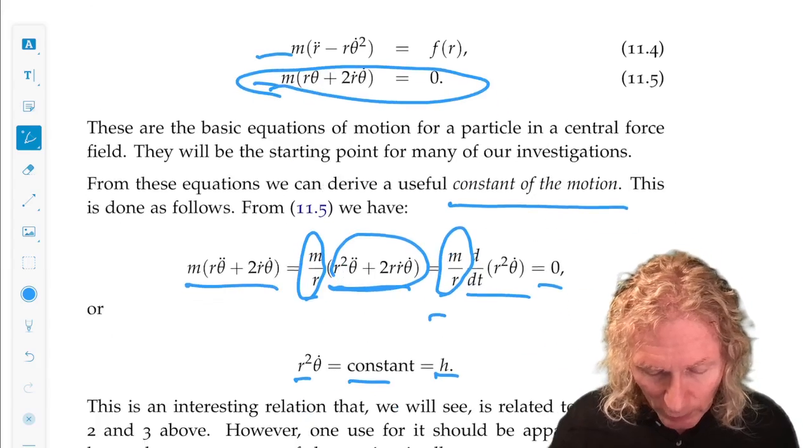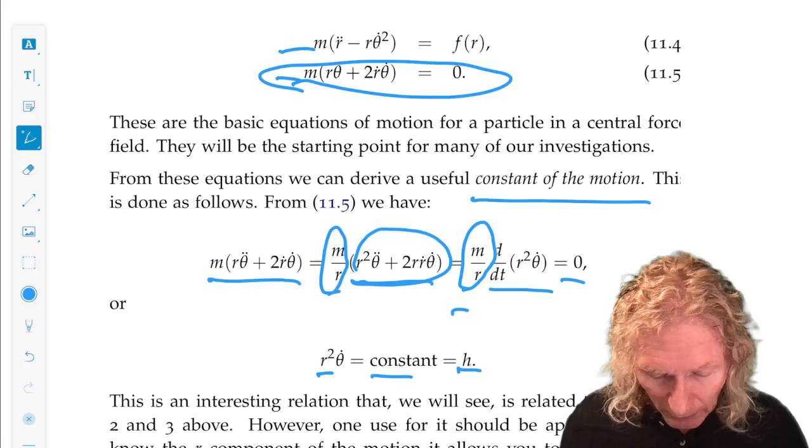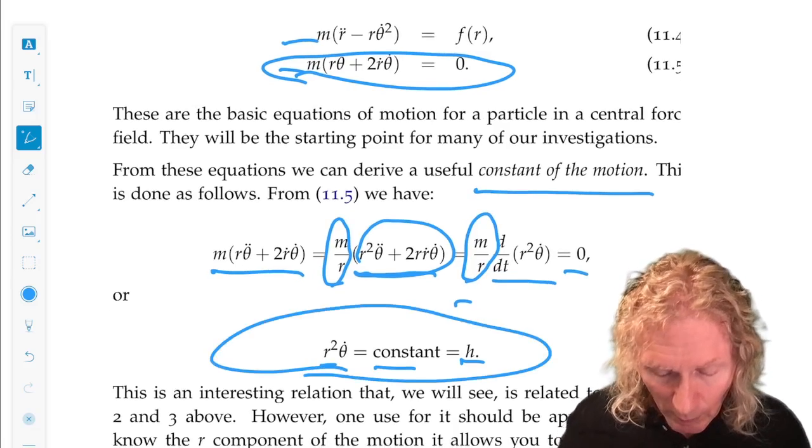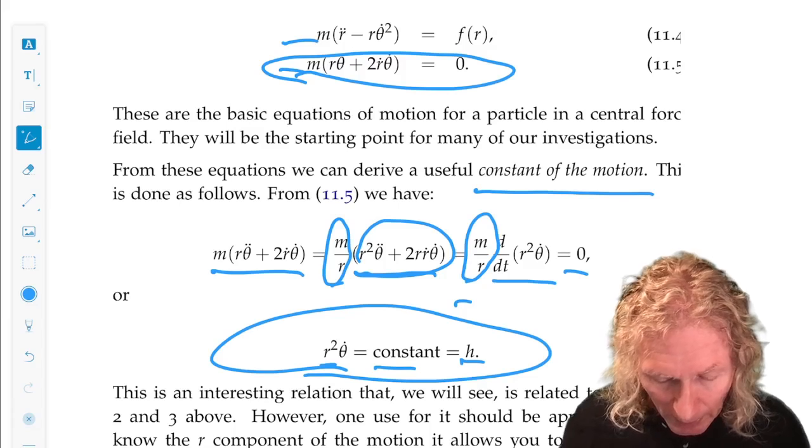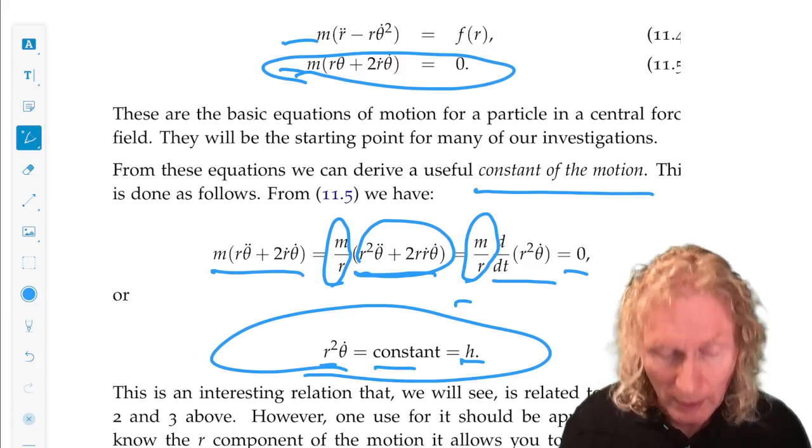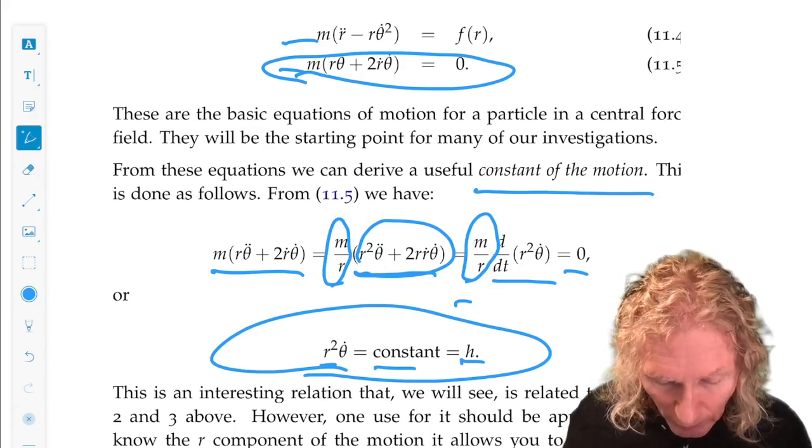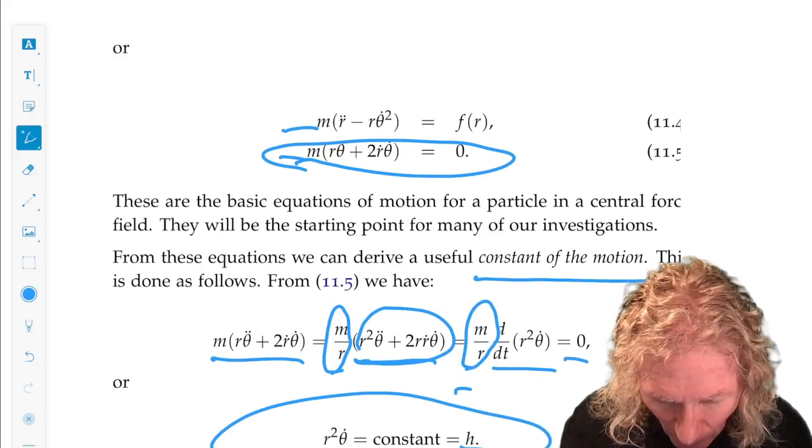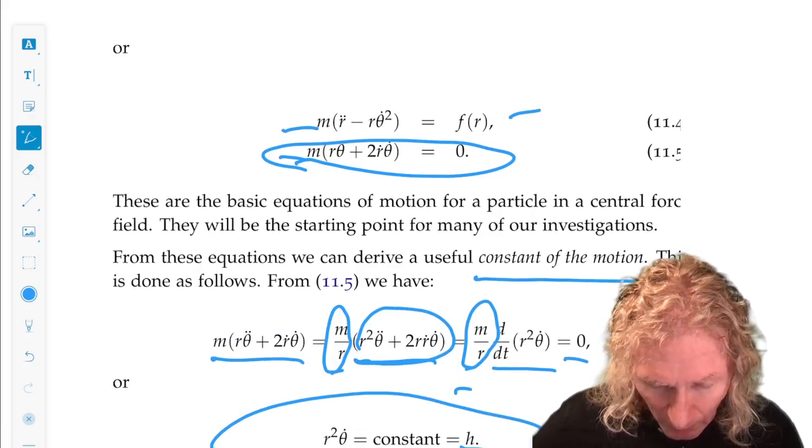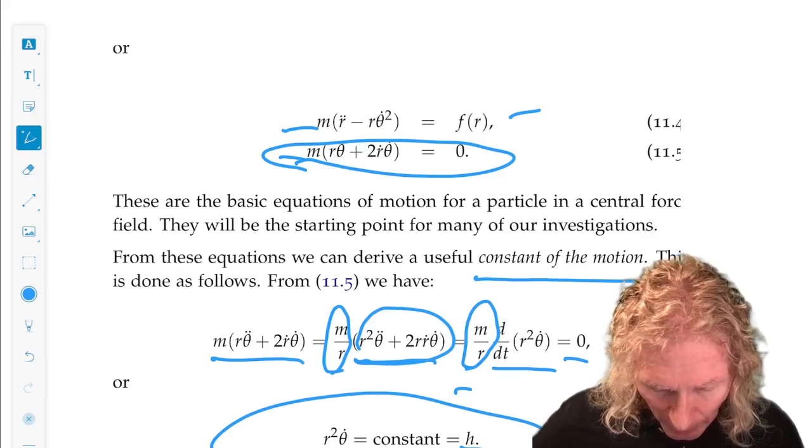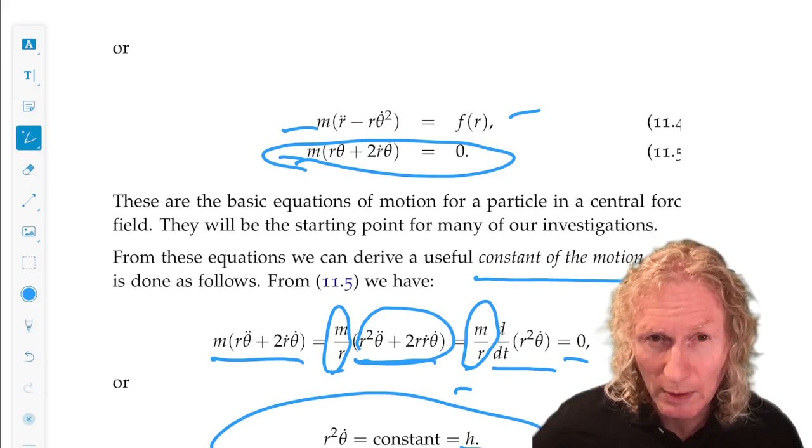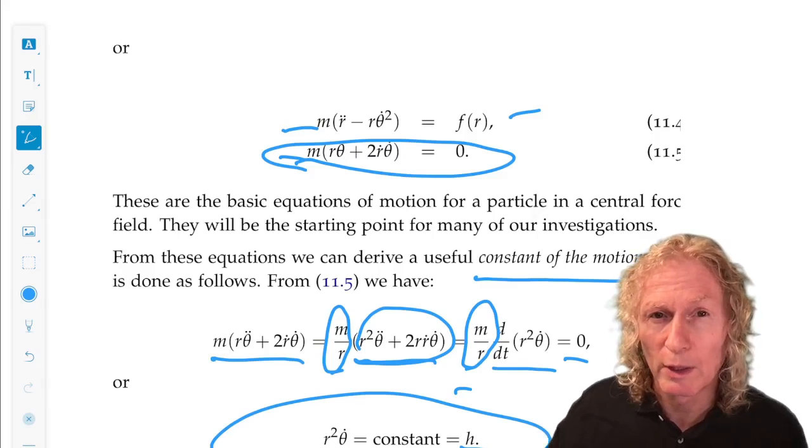But now, look how useful this would be. Because this constant of the motion enables us to write θ̇ in terms of r² or vice versa. So in this equation, for example, we could write θ̇ in terms of h over r², put it in there. We'd have just an equation for r.